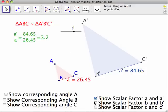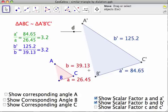What about B and B prime? So if we add that, you've got 39.13 and 125.2. And if you divide those out or set up a ratio with B prime over B, you end up with 3.2 again.